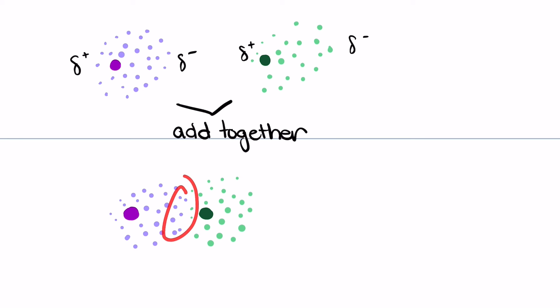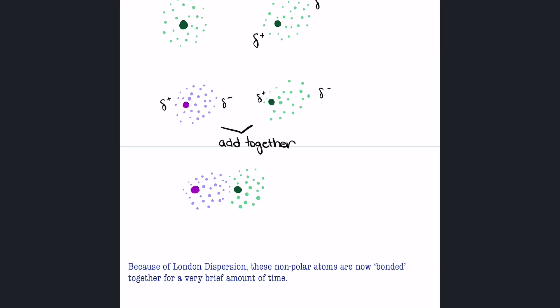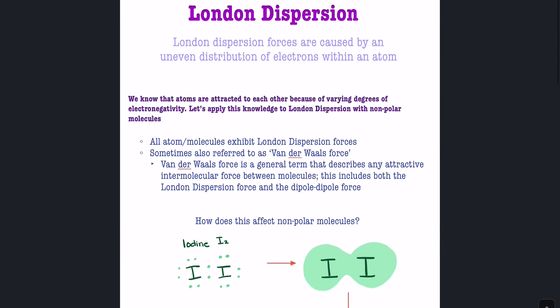So this bond happens, but then the electrons move apart and these atoms are no longer bonded. And in essence, that is London dispersion.